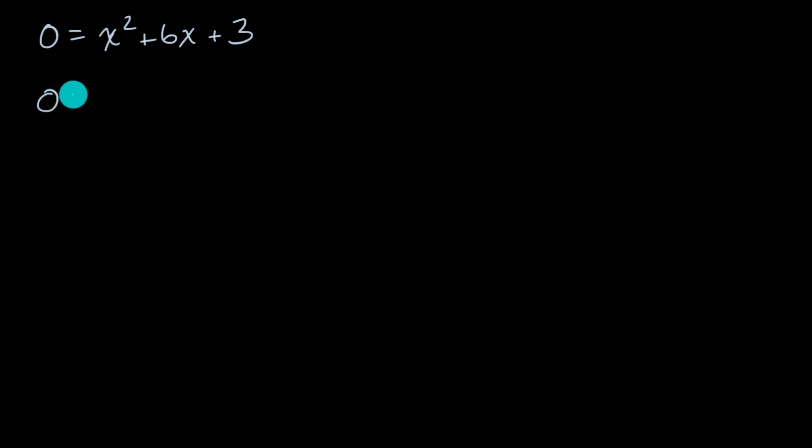And the way I do it, I'll say zero is equal to, let me rewrite the first part, x squared plus six x. And then I'm gonna write the plus three out here. And my goal is to add something to this equation or to the right-hand expression right over here.